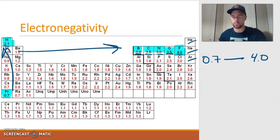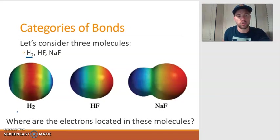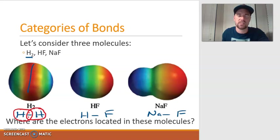Let's take a look at three molecules to nail down this idea of electronegativity. What you're seeing is electron densities for three molecules. The first molecule is H2 — two hydrogens bonded to each other. The next is HF — hydrogen bonded to fluorine. The last is NaF — sodium bonded to fluorine. The red areas show where the electrons are. In the hydrogen molecule, the electrons are right in the middle because both hydrogens have the same electronegativity, so it's like a tug-of-war with equal strength.